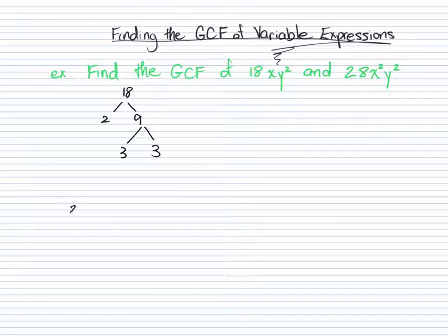and 3 times 3 gives you 9. And so now we've broken 18 up into its prime factors, which is 2 times 3 times 3. Now we can go ahead and continue to break this expression up into the smallest possible factors that we can see